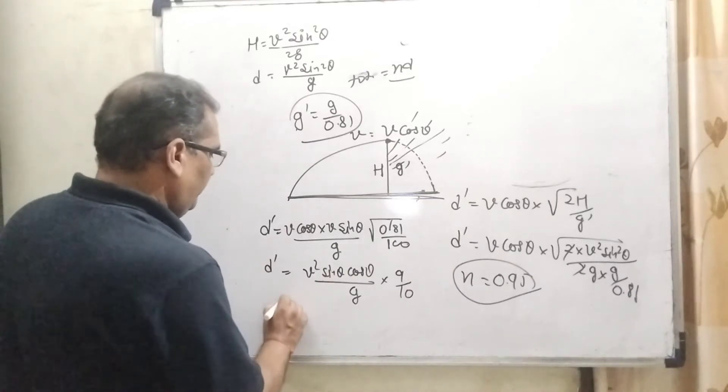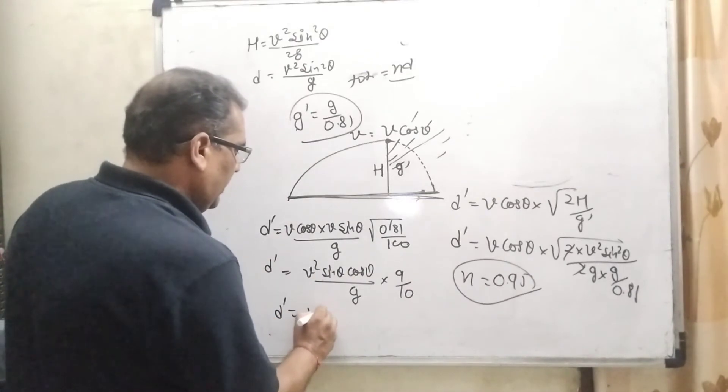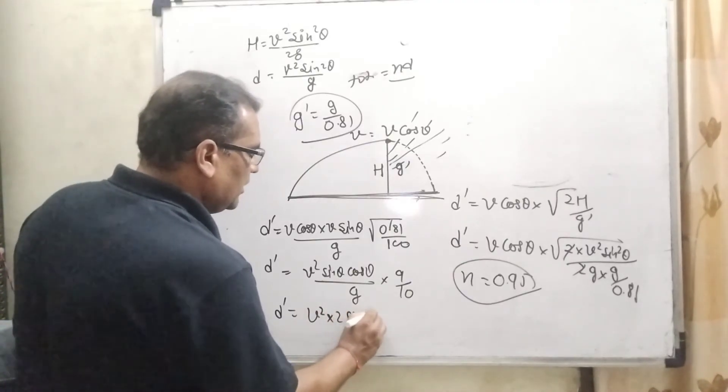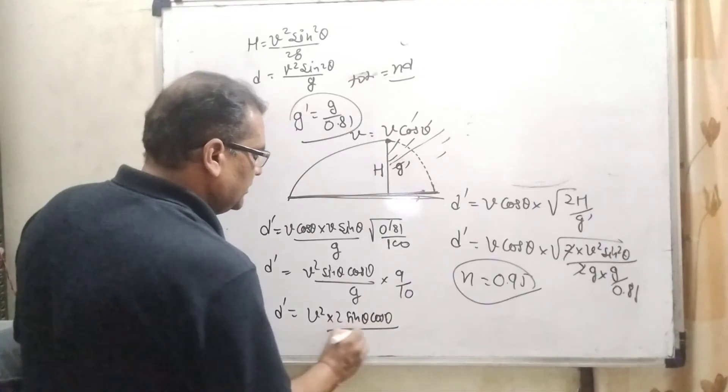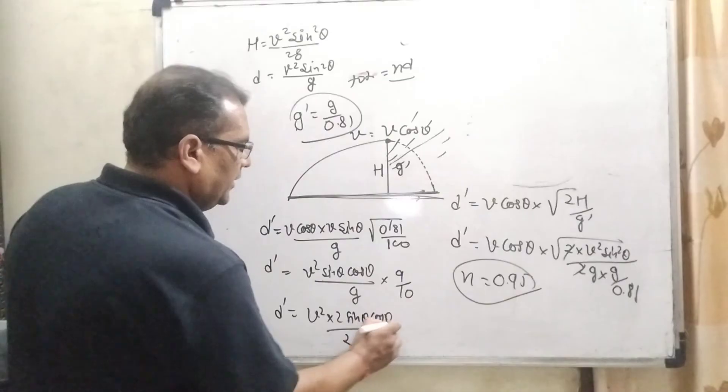Now you can see that if we multiply numerator and denominator, what will happen? Here, multiply by 2, sine theta cos theta upon g, multiply by 2 in denominator.